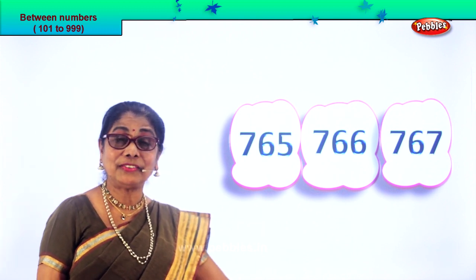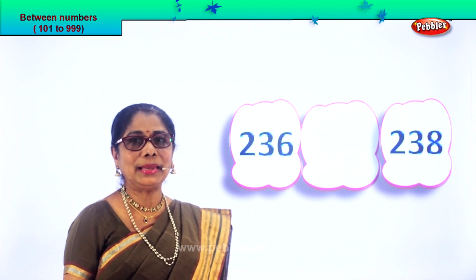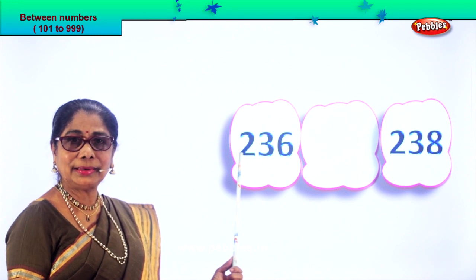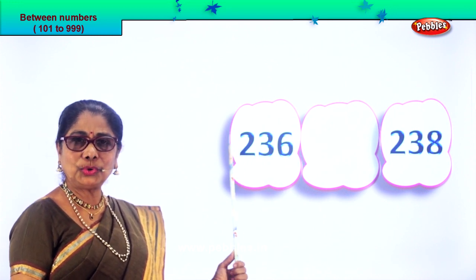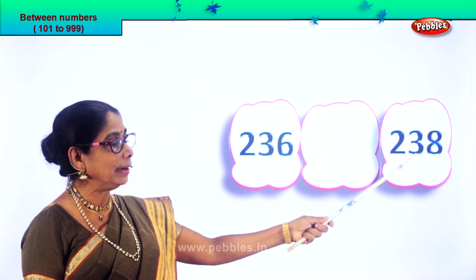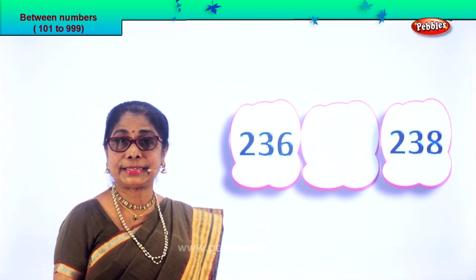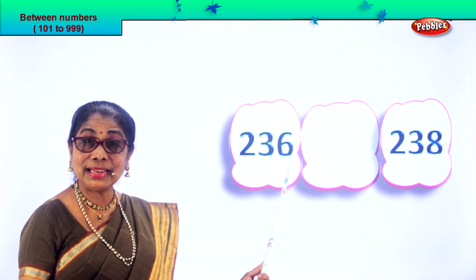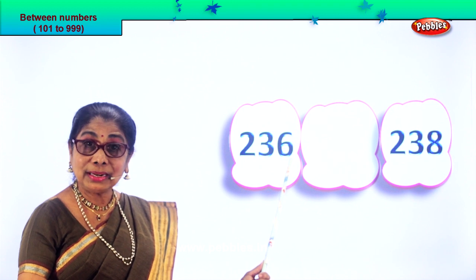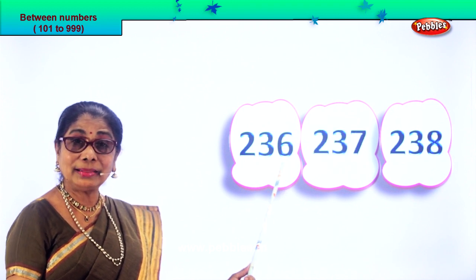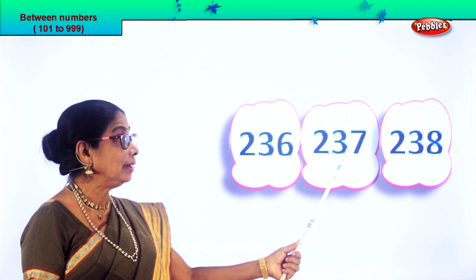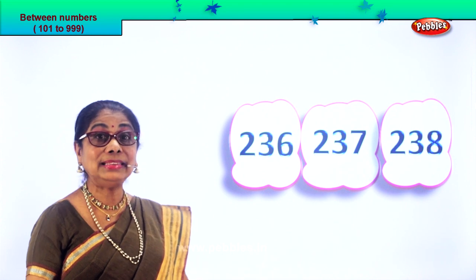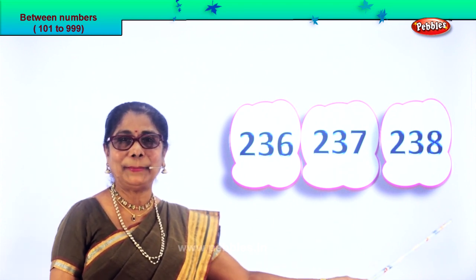Let's get on to another set of numbers and you will guess the number between. Let's read: 236 and 238. After 6 comes 7, after 36 comes 37. So 236, next will be 237, then 238. 237 is the number between these two numbers.